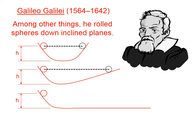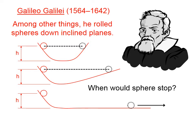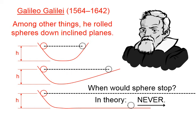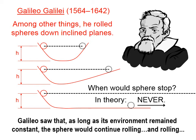So Galileo thought: suppose this surface just continues on and on forever horizontally. According to this line of thinking, when would the sphere stop rolling? And the answer is, it wouldn't — in theory. Galileo saw that as long as its environment remained constant, the sphere would continue rolling and rolling. In essence, Galileo came sneakingly close to formulating what we now call Newton's Law of Inertia.